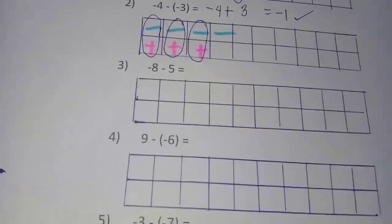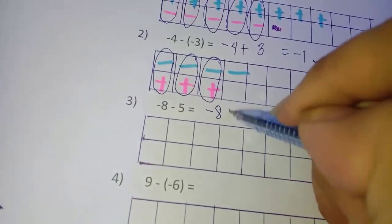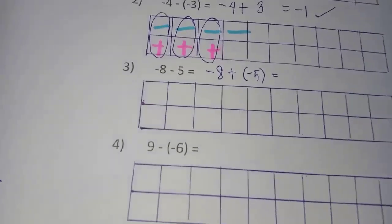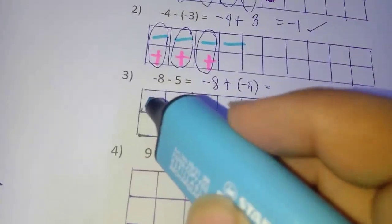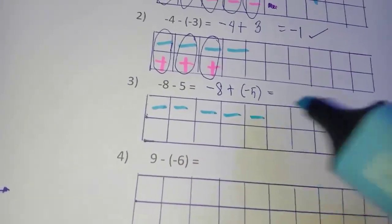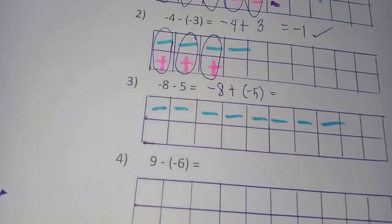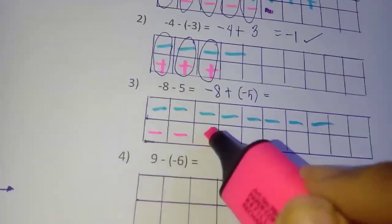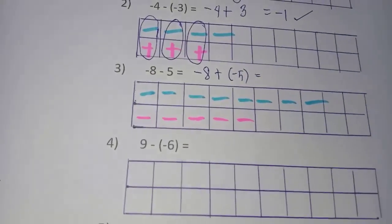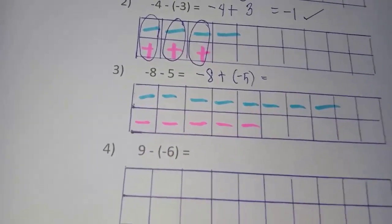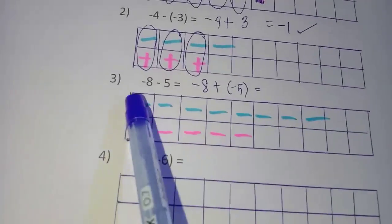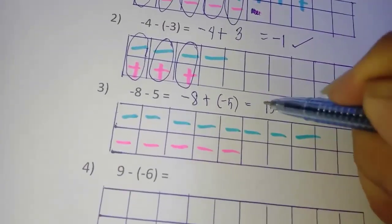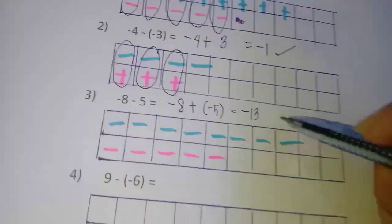Example 3: negative eight minus five, rewritten as negative eight plus negative five. Draw eight negative signed tiles for the first addend and five negative signed tiles for the second addend. There are no flexible tile pairs to cancel, so we have 13 negative signed tiles total. Hence, negative eight minus five equals negative thirteen.